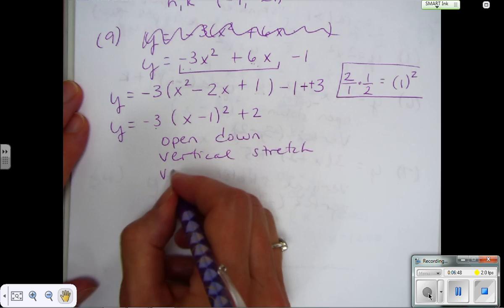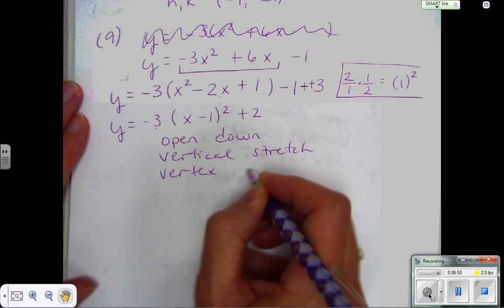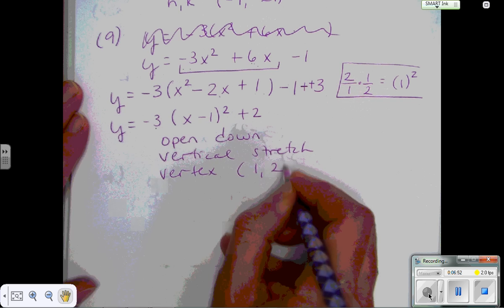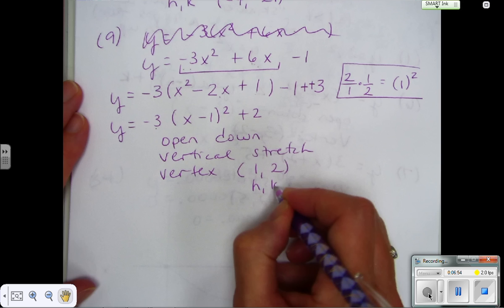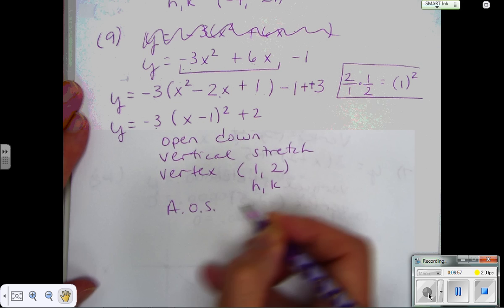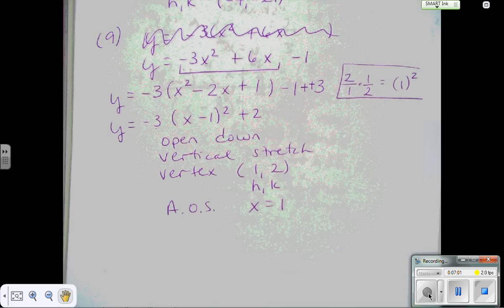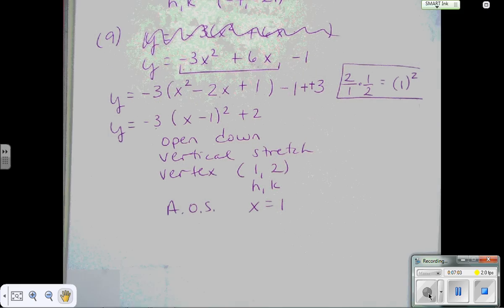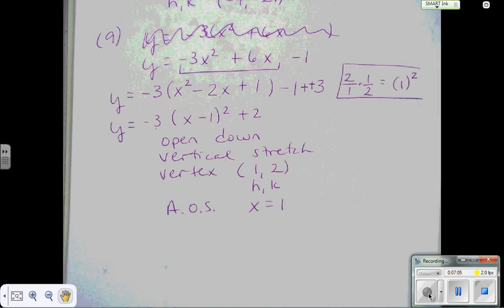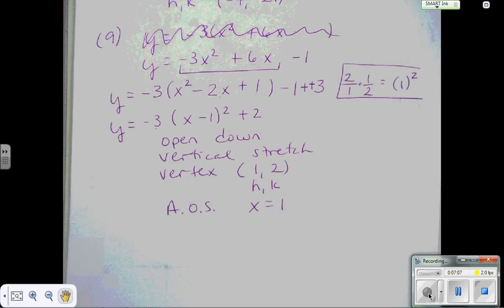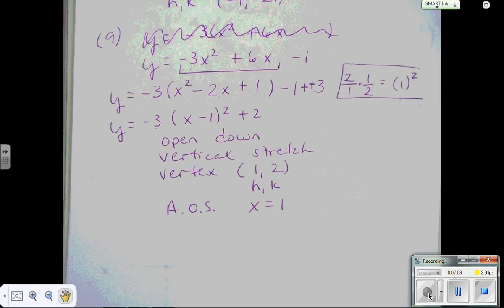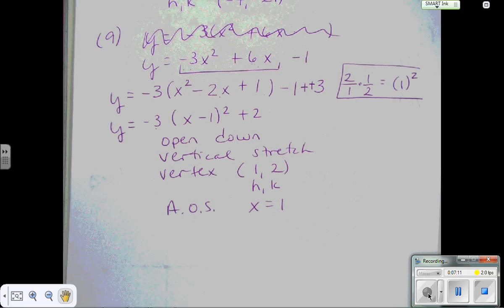And the vertex, the new vertex, is going to be 1, 2. That's your hk. And if I wanted to write the axis of symmetry, it would be x equals 1. Whatever your h is, is your axis of symmetry. So I'm going to stop here for now. We're going to come back and do a couple more little examples, and you guys will be done with the notes for tonight.